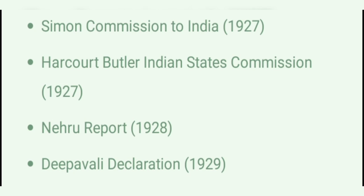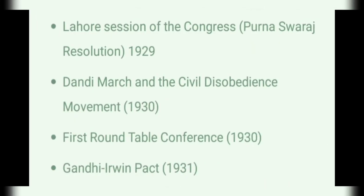Lord Irwin, 1926 to 1931. Simon Commission came to India 1927. Harcourt Butler Indian State Commission 1927. Nehru Report 1928. The Poona Declaration 1929. Lahore Session of Congress, Purna Swaraj Resolution 1929. Dandi March and Civil Disobedience Movement 1930. First Round Table Conference 1930. Gandhi-Irwin Pact 1931.